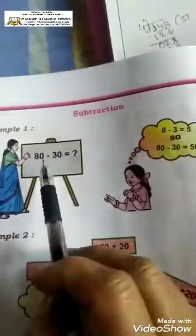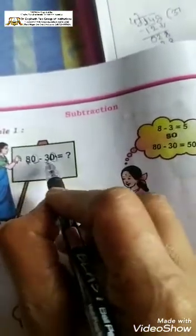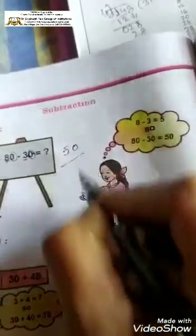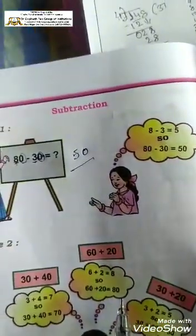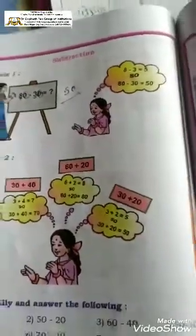Here we have a subtraction. How are you going to subtract? 80 minus 30: remember, always when 0 is there, 0 can be written as it is. 8 minus 3 is 5, 0 as it is — giving 50. Okay, children. Take care. Bye.